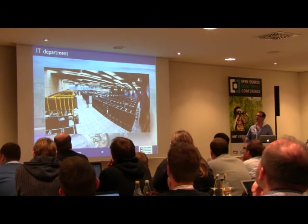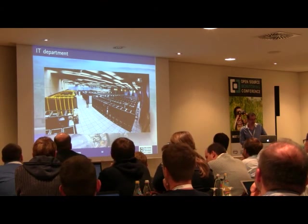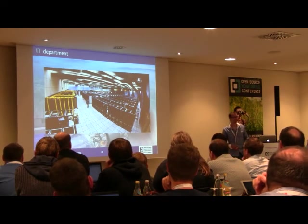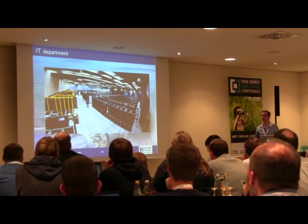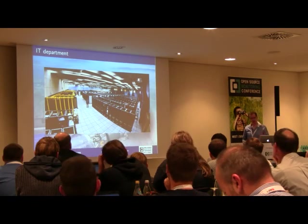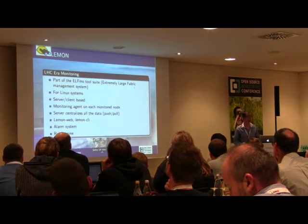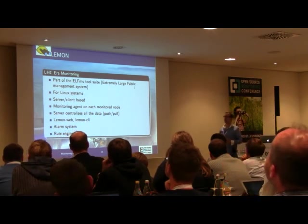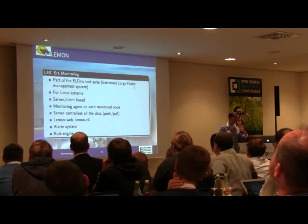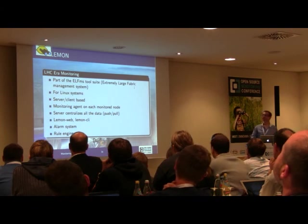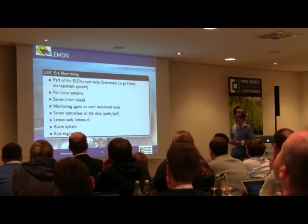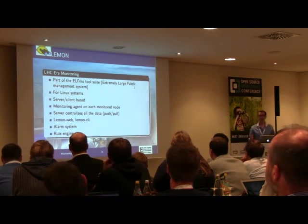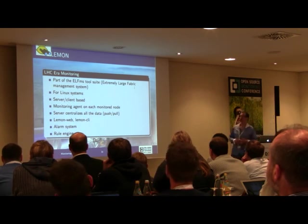The IT department addresses Linux monitoring with a tool called Lemon. When this center was designed more than 10 years ago, it was at the bleeding edge in both performance and number of machines, so they had no choice but to develop their own tools. Lemon is part of a whole set of tools developed primarily at CERN in collaboration with the European Union, designed to address large fabric management. Lemon works in a server-client way: every client runs an agent and information is populated to a central server.